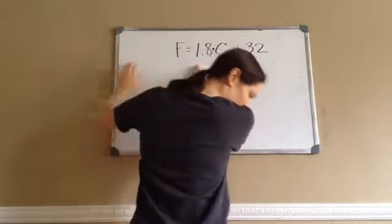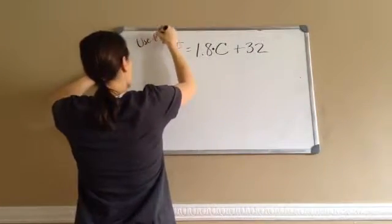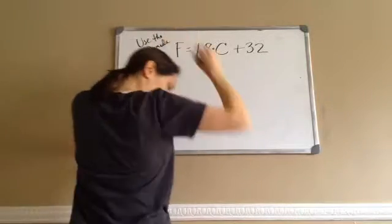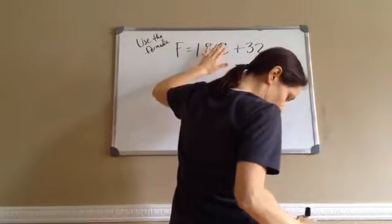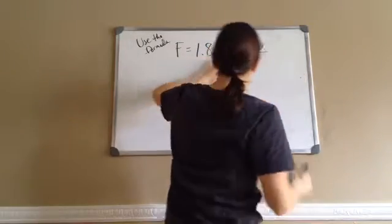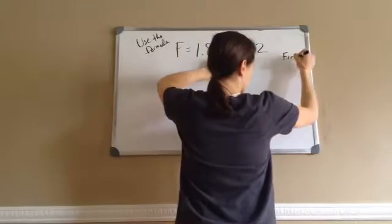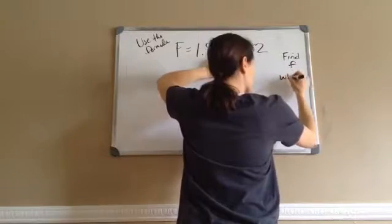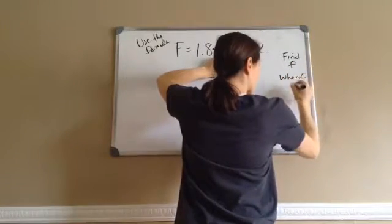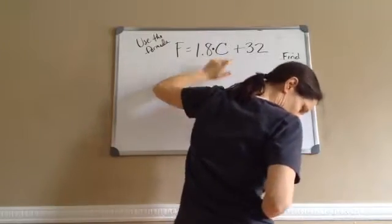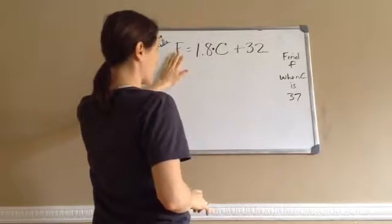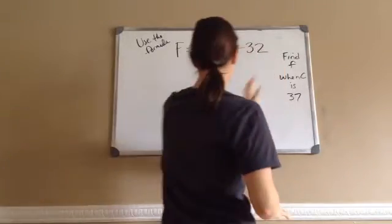To find, so they're telling me, use the formula F equals 1.8C plus 32. To find, they're wanting us to find F when C is 37. Now, because they're wanting us to find F, it's actually good that we have the F on this side and then everything else is over here.